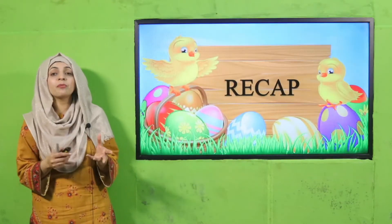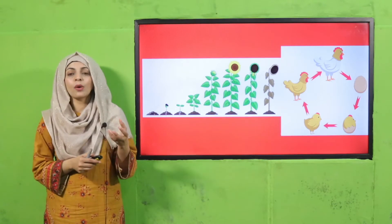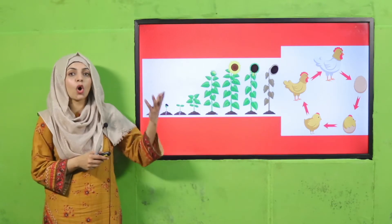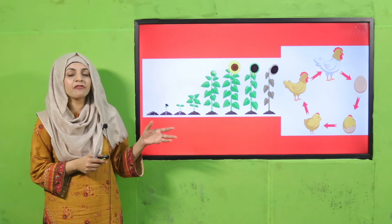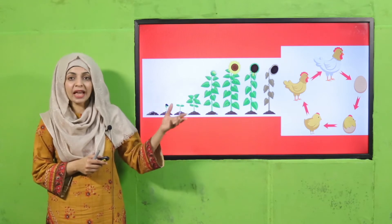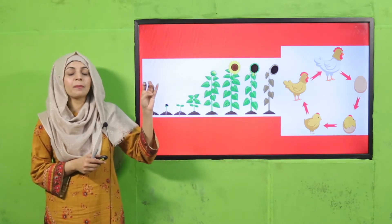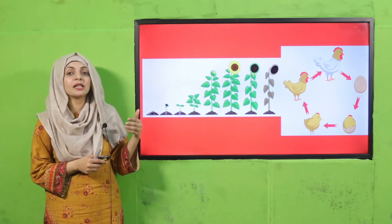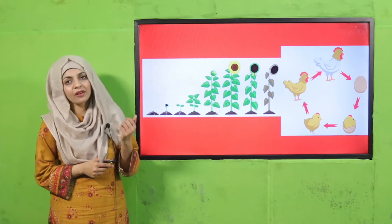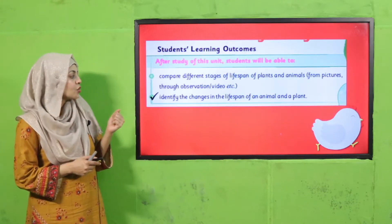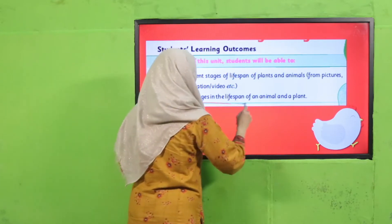Let's quickly recap what we did in the previous lectures. We discussed about the life cycles of animals and plants. Animals have life stages like birth, growth and development, and then reproduction. In plants it is germination, growth and development, and reproduction. Today, students will be able to identify the changes in the life cycle of plants and animals.